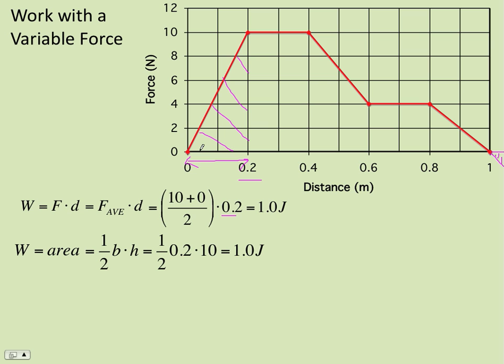We know the area of a triangle is one-half the base times the height. The base is 0.2, the height is 10. And so one-half the base times the height gives me the same answer as using the average force.